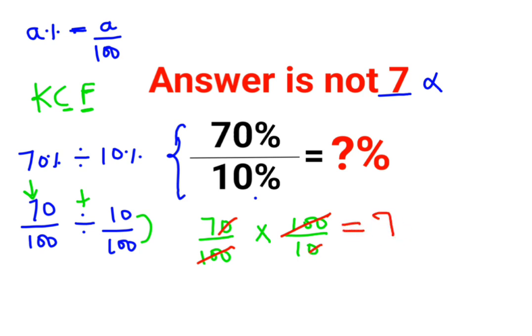But since they're looking for the answer in terms of percentage, you need to multiply this by 100. Why? Because when you have a percent and want to convert it to a number, you divide by 100. When you have a number and want to convert it to percent, you multiply by 100.